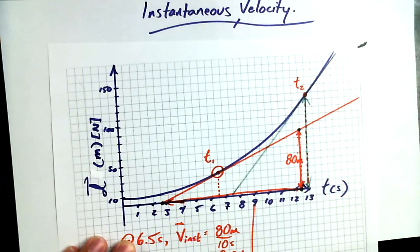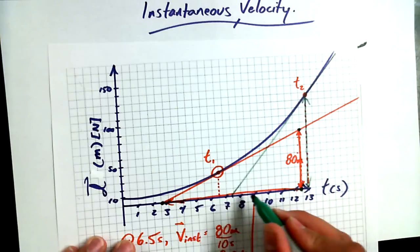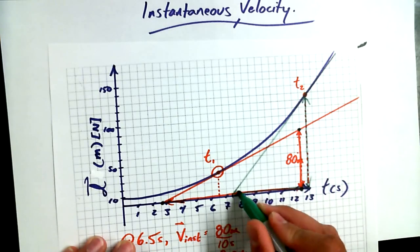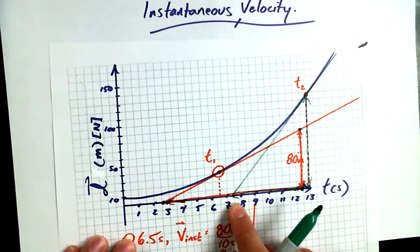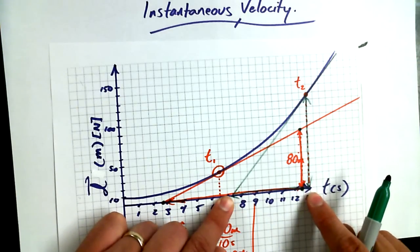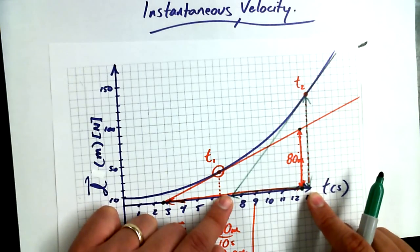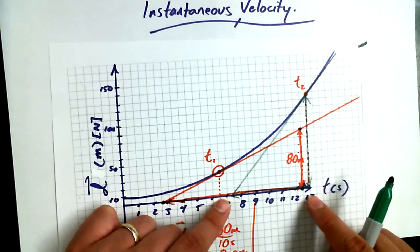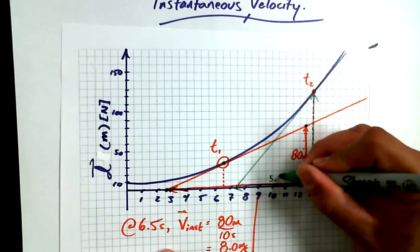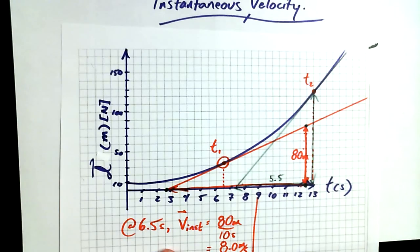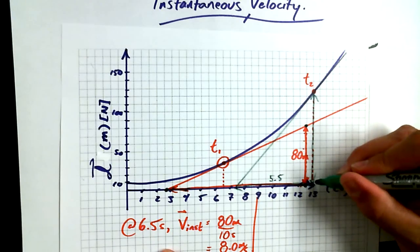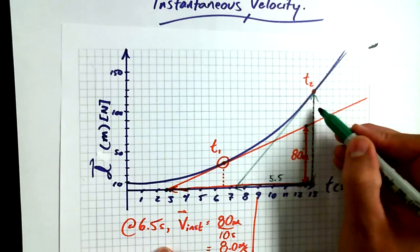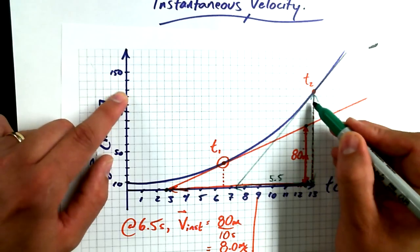I often like to use the time axis as my run, because I can see where it intersects with the time axis. It looks like it intersects at about 7.5. So from 7.5 to 13 — 13 minus 7.5 — the run is 5.5 seconds. And the rise is going to be from 0 up to about 130.